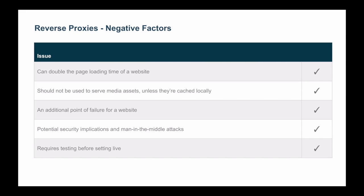You shouldn't serve media assets from a reverse proxy unless they're cached by it — ideally use a dedicated CDN. Also, a reverse proxy can be an extra point of failure: if it goes down, the end user can't reach the web server. For important websites, you may want to load balance the reverse proxies themselves for an extra layer of security. Speaking of security, there are security implications too: since the reverse proxy sits in the middle of all transactions, it's like a man-in-the-middle. If someone gains access to it they could inject links or steal credit card information. Apply the same security procedures to your reverse proxy as to your other servers.